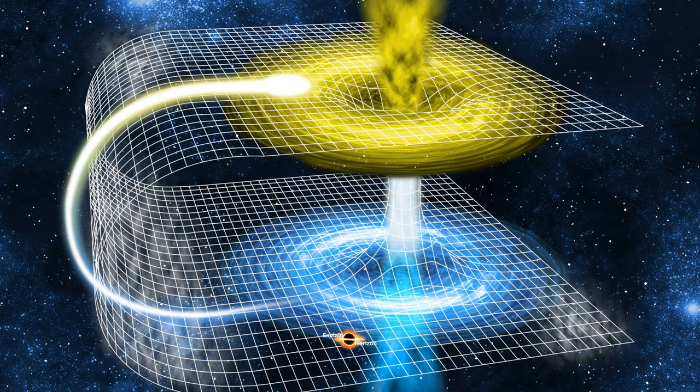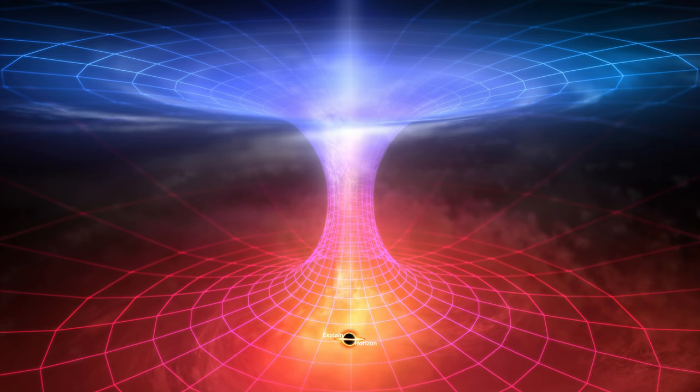Think of it like a shortcut through the fabric of the universe. Imagine folding a piece of paper in half and poking a hole through it. The two sides of the paper are like two distant points in space-time, and the hole is the wormhole connecting them.